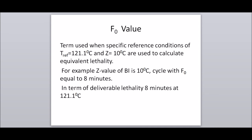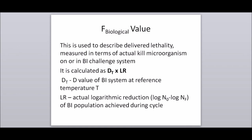F zero value: the term used when a specific reference condition of T-reference equal to 121.1°C and Z equal to 10°C are used to calculate equivalent lethality. For example, if the Z value of a BI is 10°C, a cycle with F zero equal to 8 minutes delivers lethality equivalent to 8 minutes at 121.1°C. F biological value: used to describe delivered lethality measured in terms of actual killed microorganisms on or in a biological indicator challenge system.